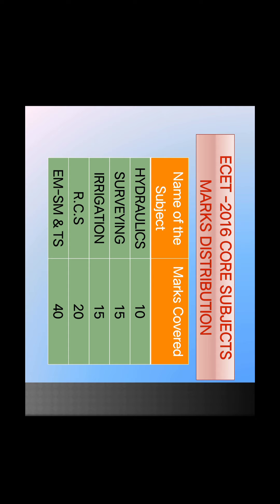The core subjects marks distribution in 2016: there are 4 papers across 2016, 2017, 2018, and 2019. The marks distribution in ascending model is: Hydraulics — 10 marks, Surveying — 15 marks, Irrigation — 15 marks, RCC — 20 marks, and the remaining Engineering Mechanics, Strength of Materials, and Theory of Structures — 40 marks.